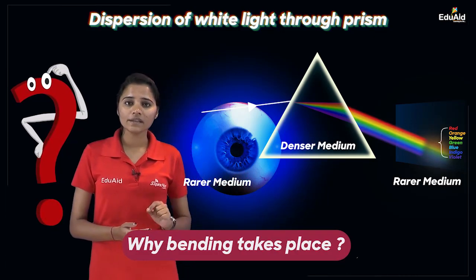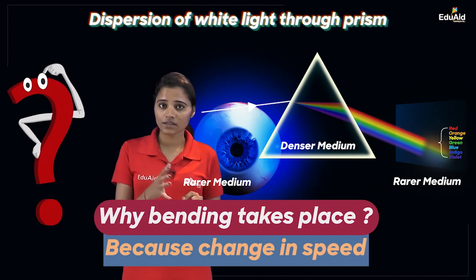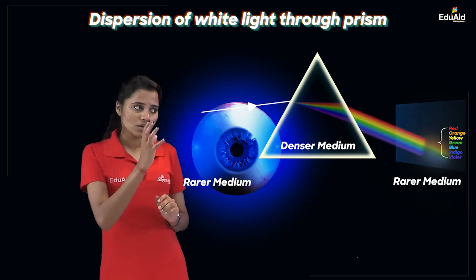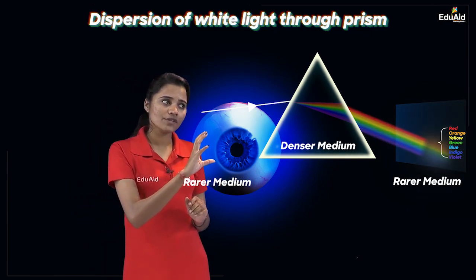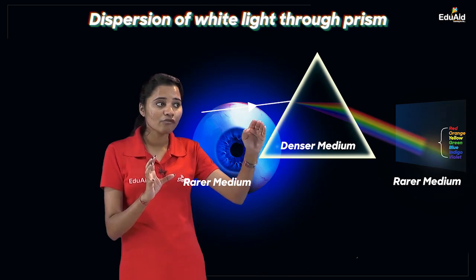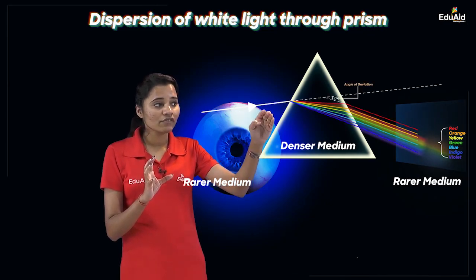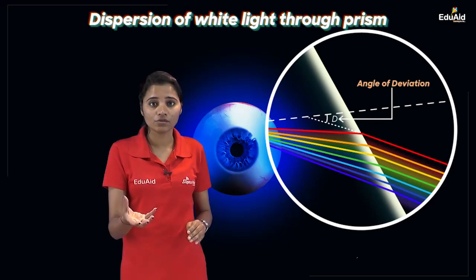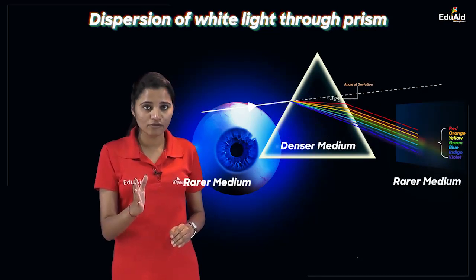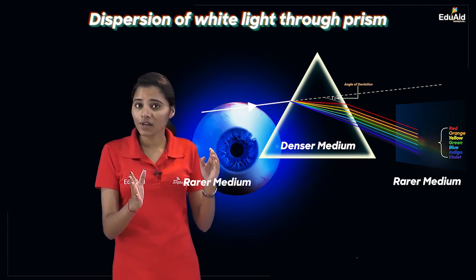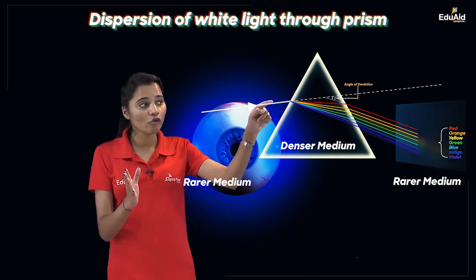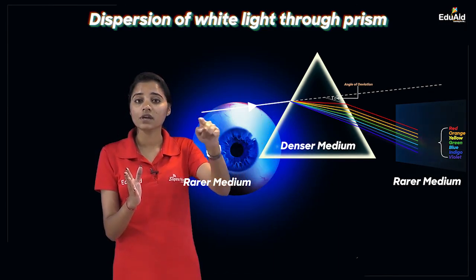Why does bending take place? It is because of a change in speed as soon as light encounters another medium — in this case, the glass prism. Since all the colours inside the prism do not have the same speed, they will adapt different paths. The extent to which they suffer refraction — or the extent to which they get bent with respect to the direction of the original incident beam — will be different. The speed of all the colours inside the glass prism is not the same.